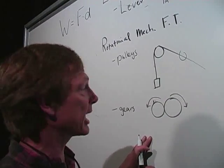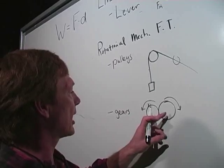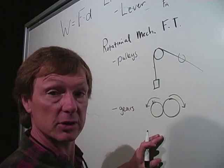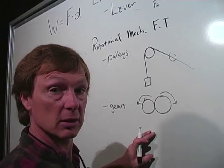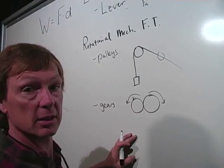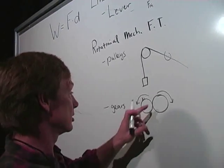The ideal mechanical advantage is the ratio of output to input number of teeth. The actual is the force out over force in. But the number of teeth will actually tell you the ideal mechanical advantage, the ratio of the two.